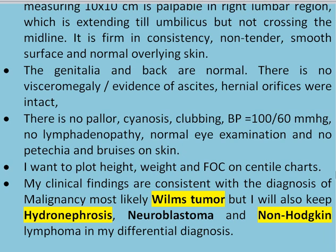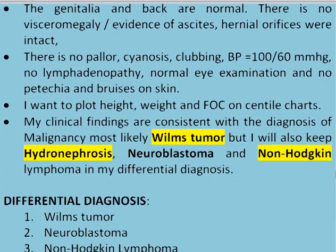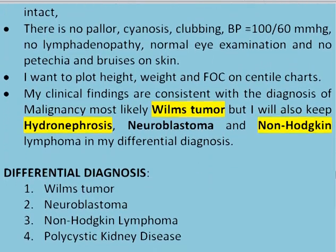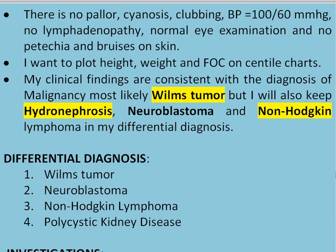I will also keep hydronephrosis, neuroblastoma, and non-Hodgkin's lymphoma in my differential diagnosis. Remember, if you are clinically certain about Wilms tumour, just say that your most likely diagnosis is Wilms tumour, and if the examiner asks for differentials, then tell them. The differential diagnosis includes Wilms tumour, neuroblastoma, non-Hodgkin's lymphoma, and polycystic or multicystic kidneys.